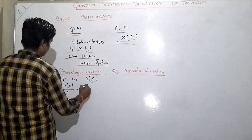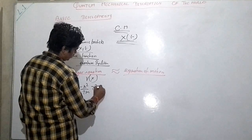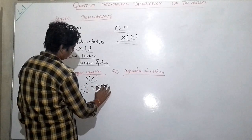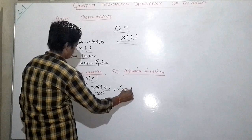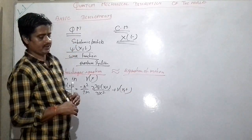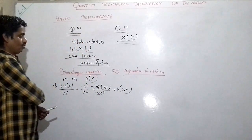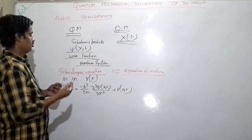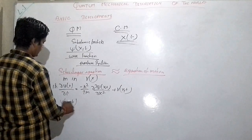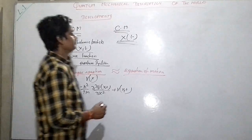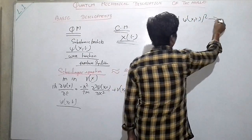The Schrödinger equation takes the form: iħ ∂ψ/∂t = −(ħ²/2m) ∂²ψ/∂x² + V(x,t)ψ. We can solve this Schrödinger equation to know the evolution of any quantum system, where ψ(x,t) is the wave function.